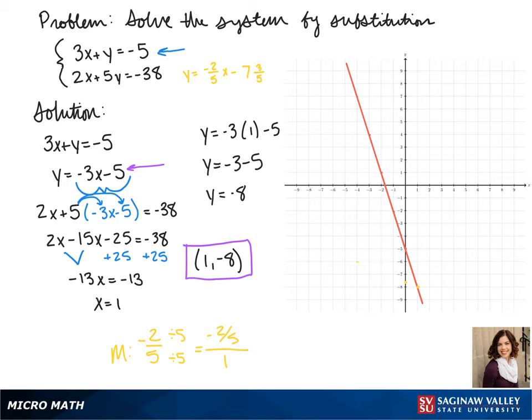From that point we can use our slope of negative 2 fifths to find more points. Then we can connect all those points to make our line. And we see that where the lines intersect is our solution of 1, negative 8.